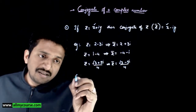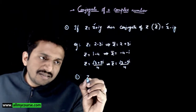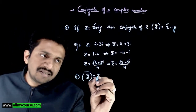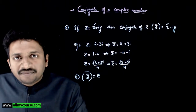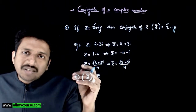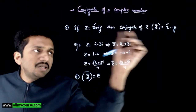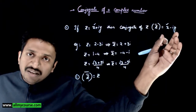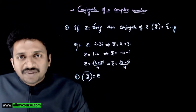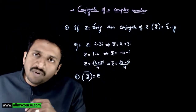The first property: z bar whole bar is again equal to z. If you conjugate a complex number two times — you have x plus iy, you conjugate this to get x minus iy, then conjugate again — you get x plus iy back. So z bar whole bar is equal to z.